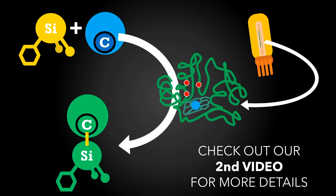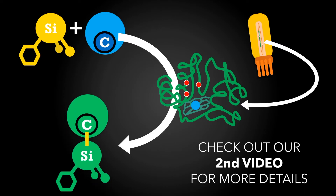You see, a clever combination of fast phage propagation, mutation and selection can be used to create proteins with improved or even entirely new features. For more details, check out our second video.